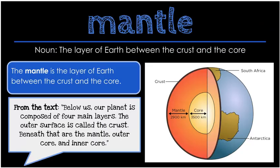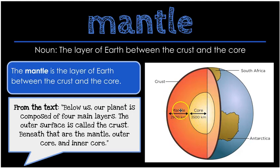Our first word is mantle. Mantle is a noun, and it means the layer of earth between the crust and the core. In the text, it says: below us, our planet is composed of four main layers. The outer surface is called the crust. Beneath that are the mantle, outer core, and inner core. In the illustration here, we see the crust, the mantle, and this illustration puts the core, inner core, and outer core together, but you can still see where the mantle is.